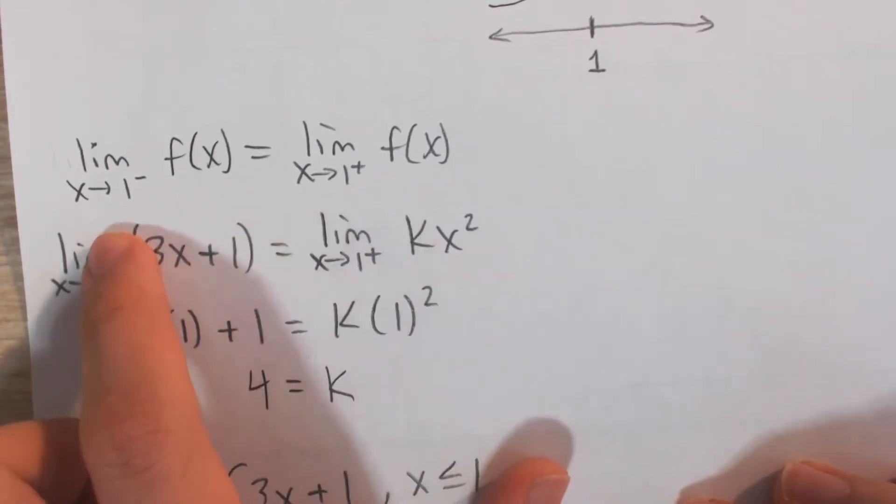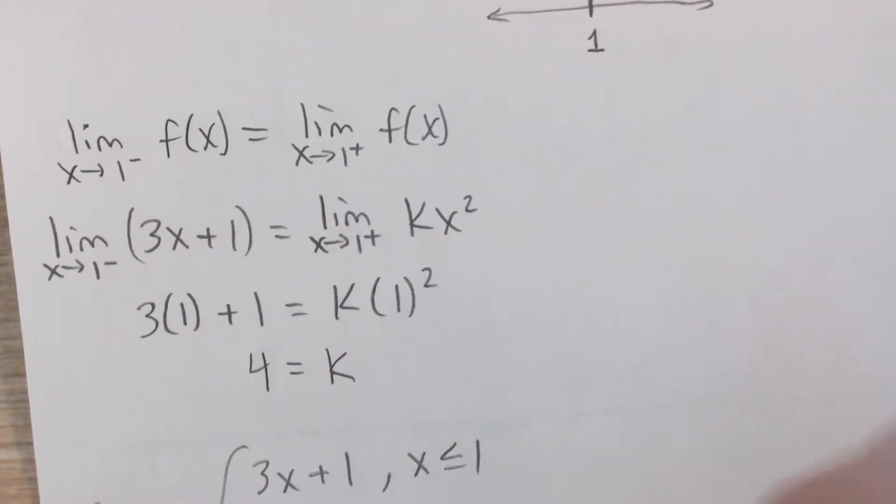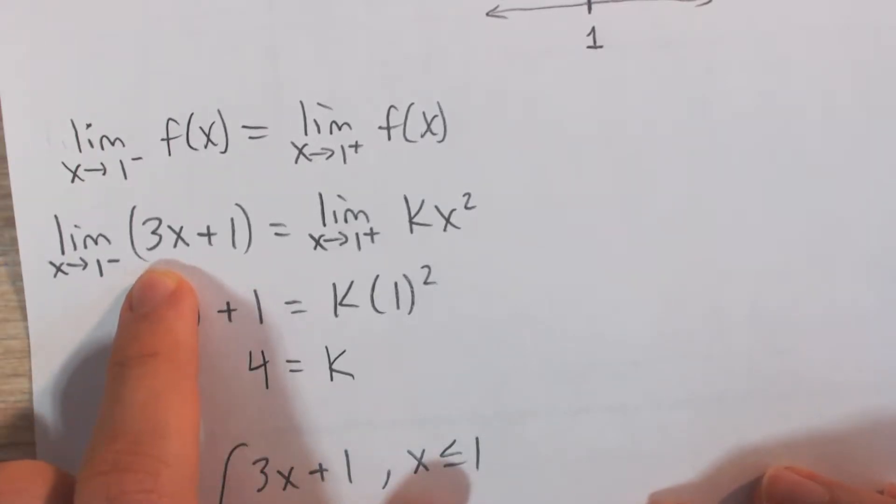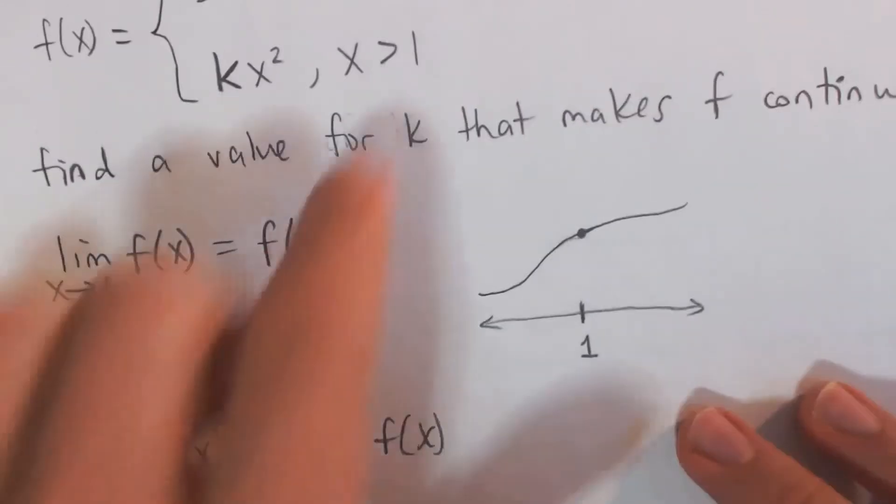Limit as x approaches 1 from the negative side from the left, equal to x approaches 1 from the positive side. Again, from the negative side, that means x is less than 1, it's slightly less than 1.